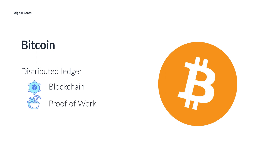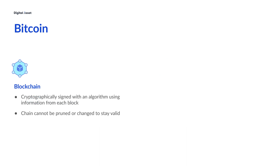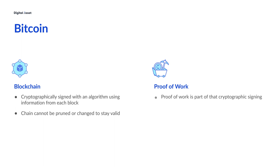Transactions are bundled in blocks and cryptographically signed with an algorithm using information from each block. If anyone tries to change a previous transaction, it would break the chain's cryptographic signatures and signal to everyone something has happened. Proof-of-work is part of that cryptographic signing. When the algorithm runs, it's looking for a very specific format or pattern to the signature. That signature takes work for a computer to produce, often referred to as mined. If multiple computers produce the same signature at the same time, there's consensus.